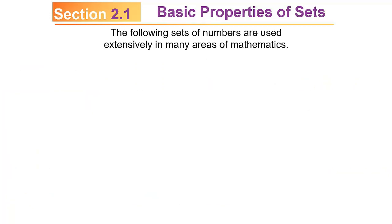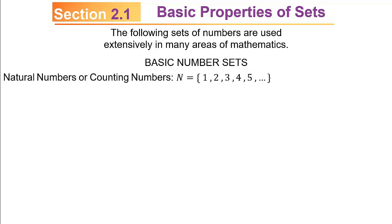Because this is a math course, we'll be particularly interested in certain sets used extensively in many areas of mathematics. First of all, we have the natural numbers, sometimes called the counting numbers — we use a capital N for those. It's simply the numbers we count with: 1, 2, 3, 4, 5. The ellipses, the dot-dot-dot at the end, just means that the pattern continues forevermore.